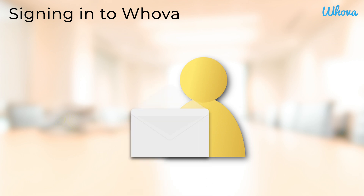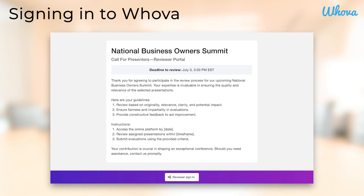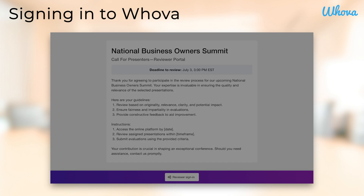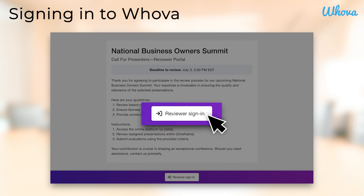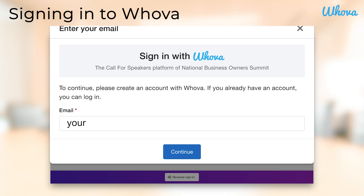Click the link to open Whova's reviewer portal, where you'll see some event information and review guidelines and instructions. Click 'Reviewer Sign In' to sign in to Whova. Sign in with your email to which the invite was sent and click continue.